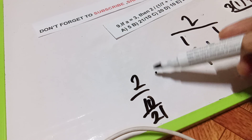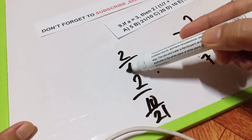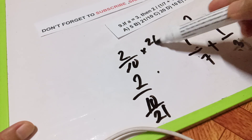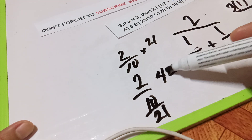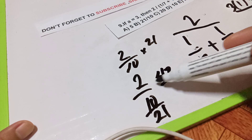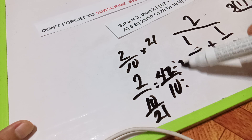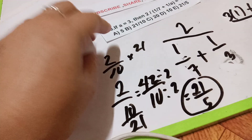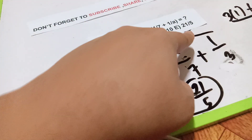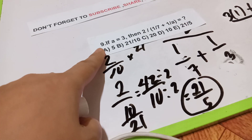So this becomes 2 over 10 times 21, and the answer is 42 over 10. But we need to divide by 2 — that gives us 21 over 5. So the answer is letter E. This is already in a fraction form — and the method used here is substitution.